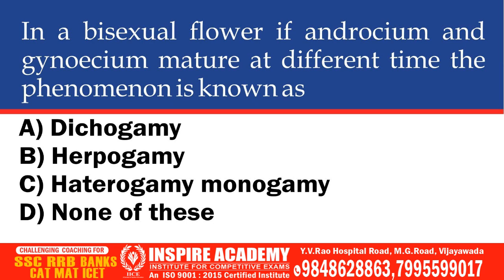In a bisexual flower, if androecium and gynoecium mature at different times, the phenomenon is known as which of the following? Options: Dichogamy, Herkogamy, Heterogamy, Monogamy, None of these. The correct option is Dichogamy.